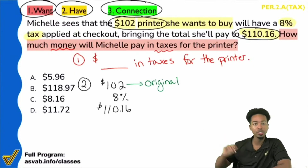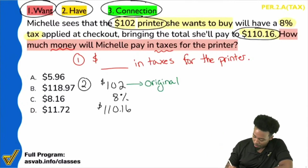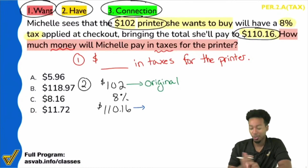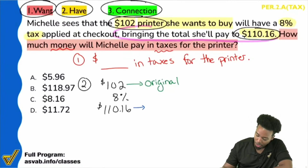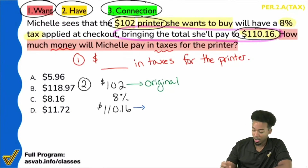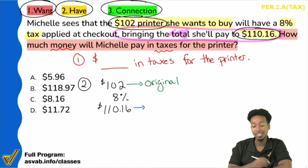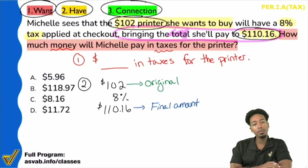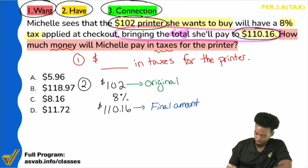It was $102 just listed. So what does $110.16 represent? That's the total after taxes — the final cost. The problem says bringing the total she'll pay to $110.16, so that is the final amount. And the 8%? That was the tax percent.